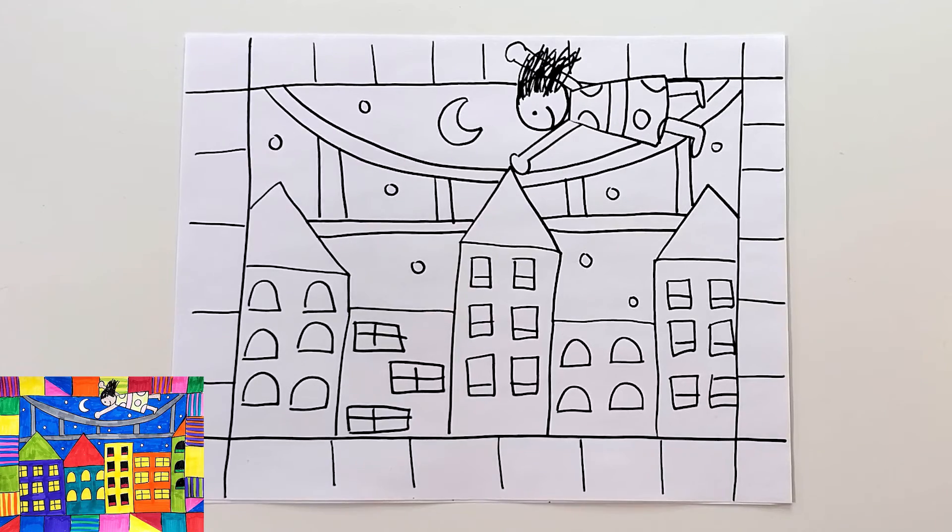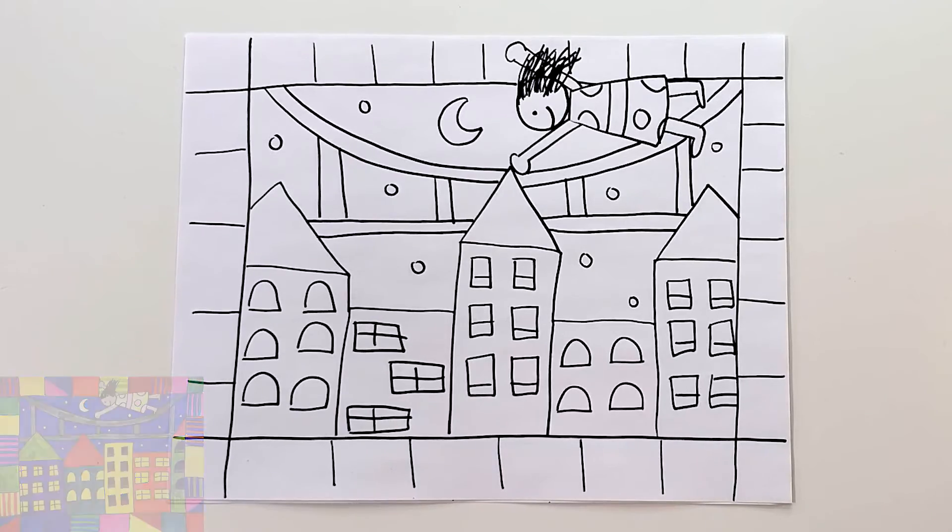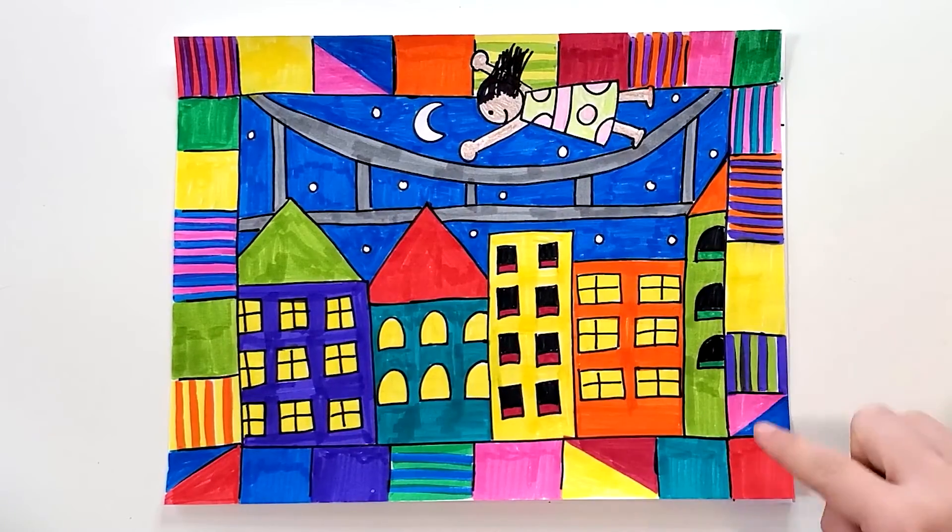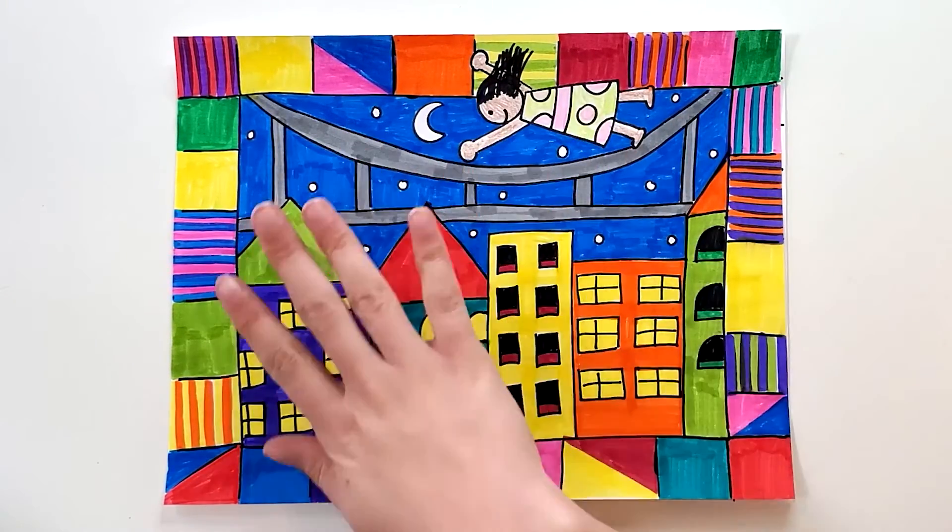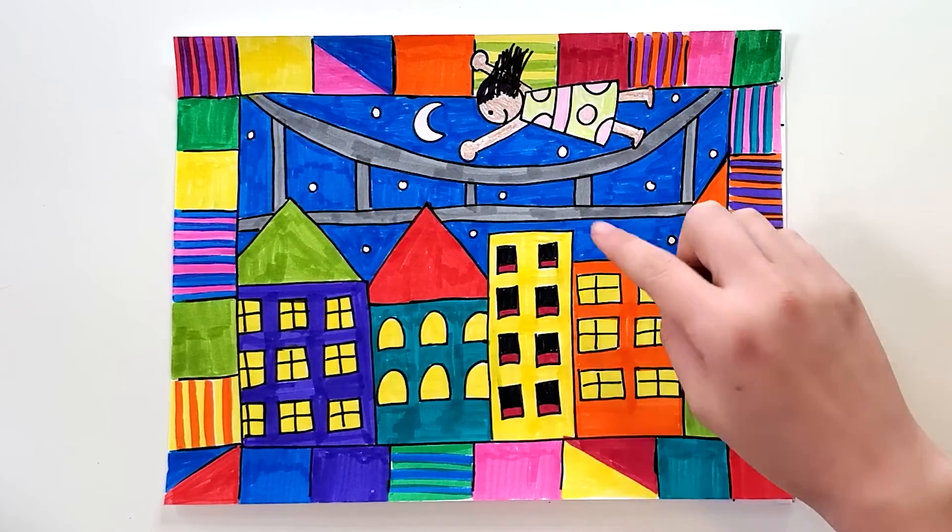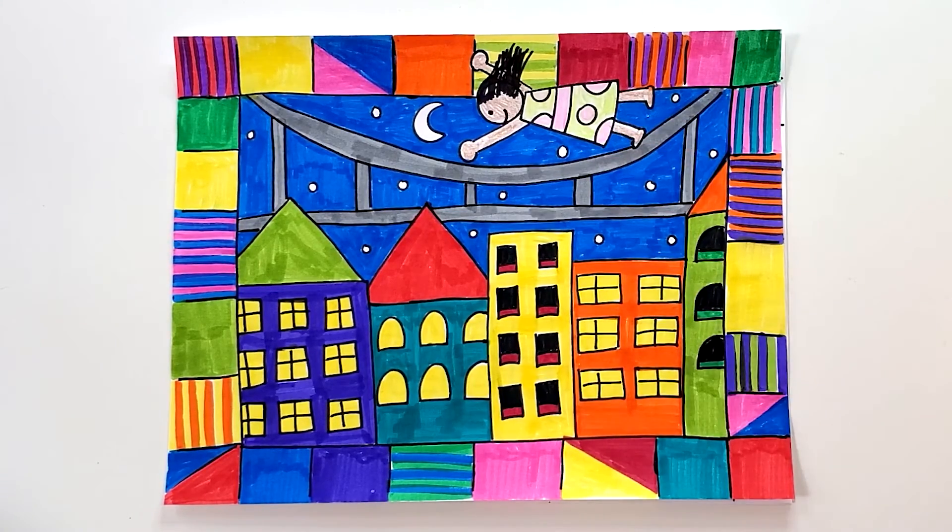And that is all the steps for making your Faith Ringgold Tar Beach inspired drawing. Of course when you color it in it's going to look much more exciting. Kind of like this. So see how I did lots of colors on the quilt border and I also added lots of colors to my buildings and my sky and my person. And when you're all done I think it's a really fun colorful and exciting drawing.